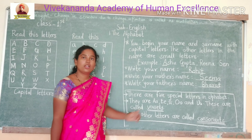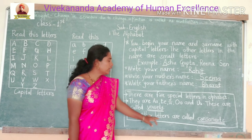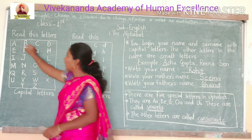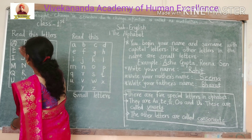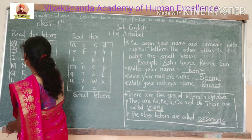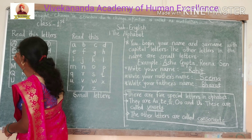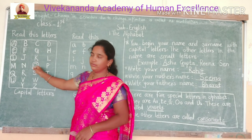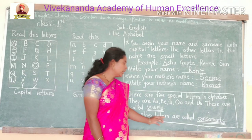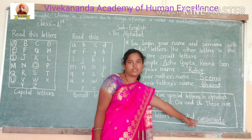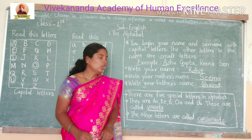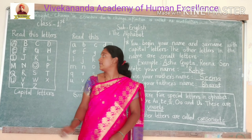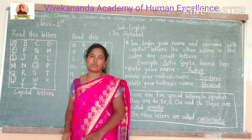These are called vowels. The other letters — the remaining letters after A, E, I, O, U — are called consonants. So the remaining letters of the alphabet are called consonants.